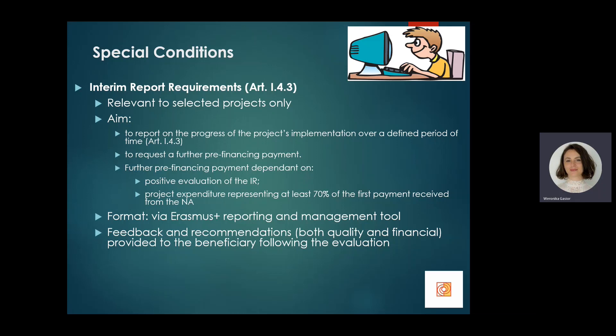Beneficiaries are allowed to submit an interim report either by deadline or when the 70 percent rule is fulfilled, meaning it can be submitted before the deadline specified in the grant agreement. If the interim report is due but expenditure is still below the 70 percent threshold, the report still needs to be submitted for evaluation purposes, and a further one will be requested once the threshold is met. The interim report is submitted via the online Erasmus Plus reporting and management tool.